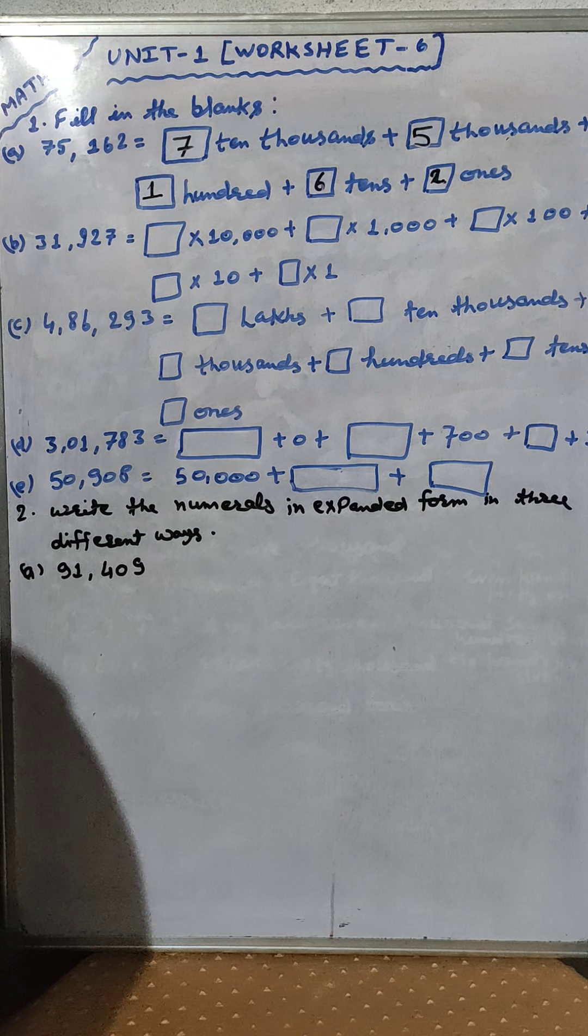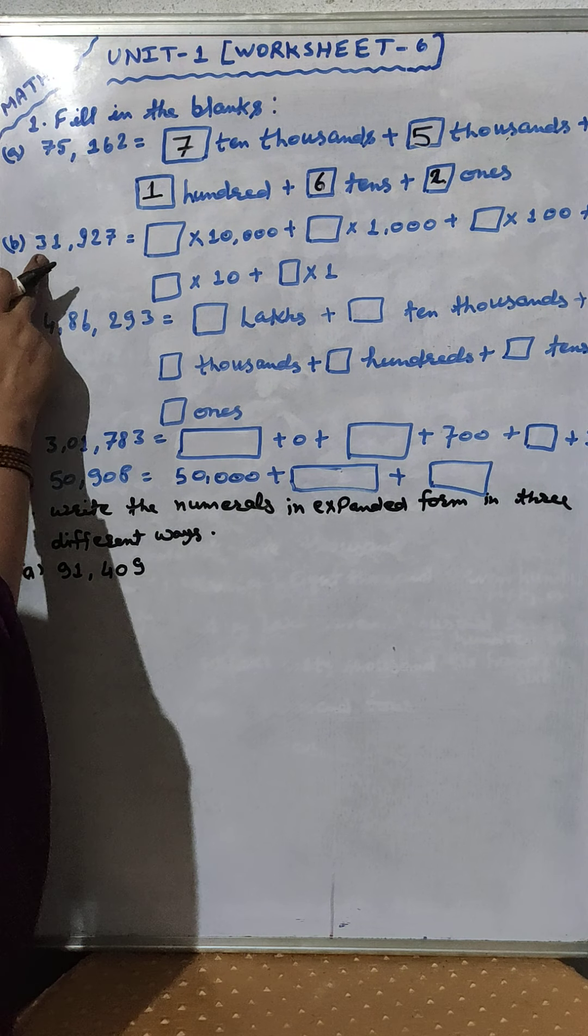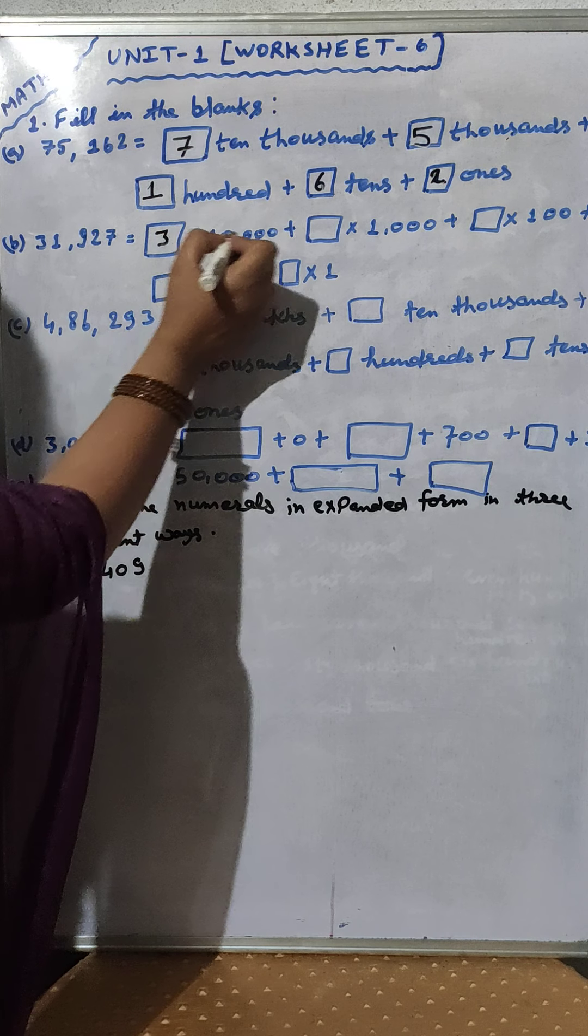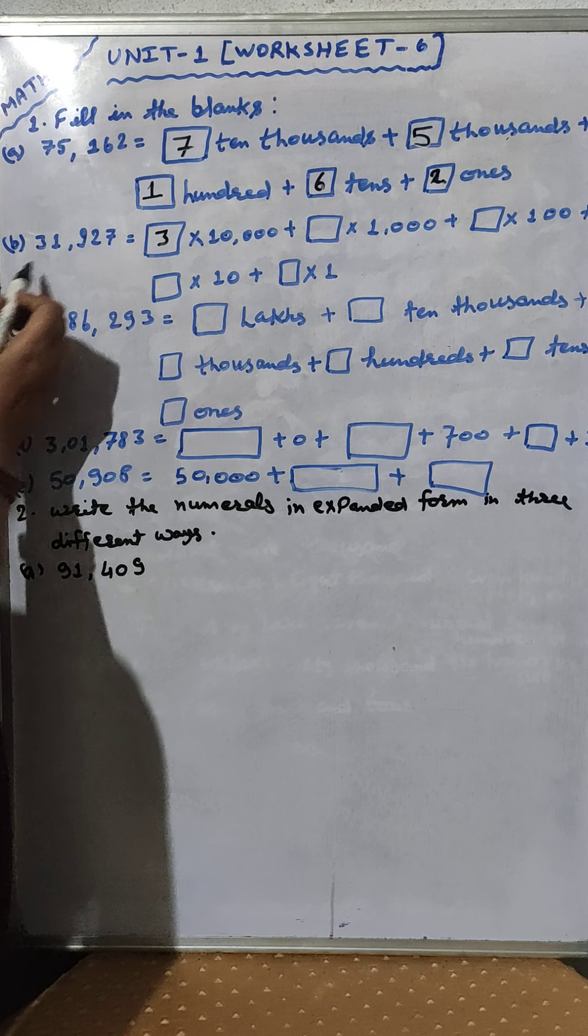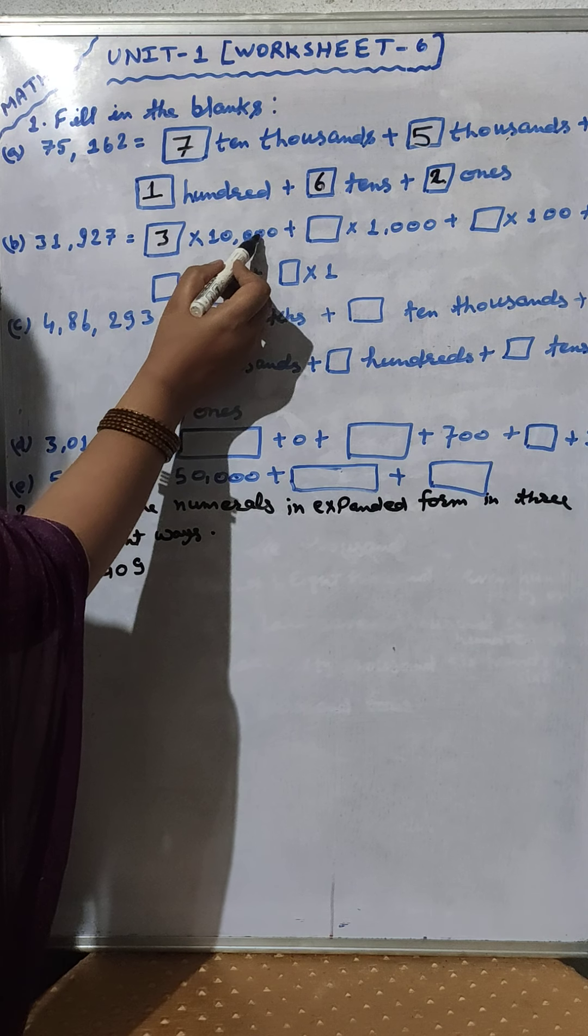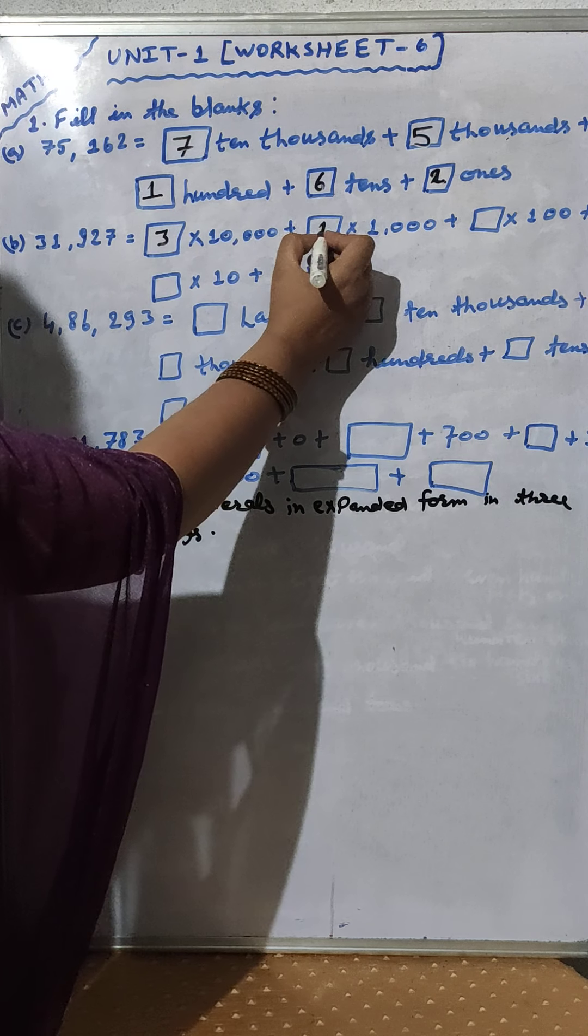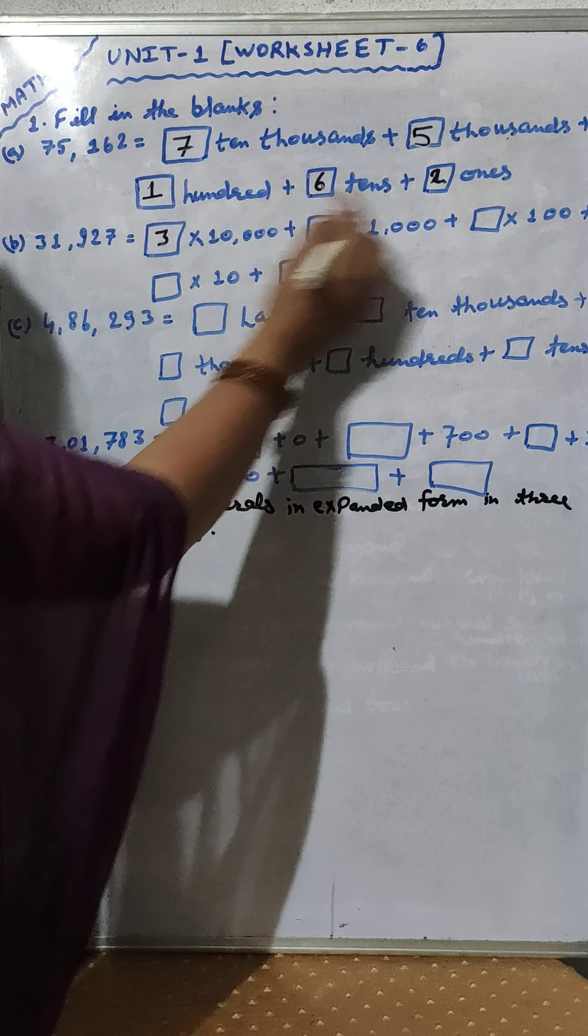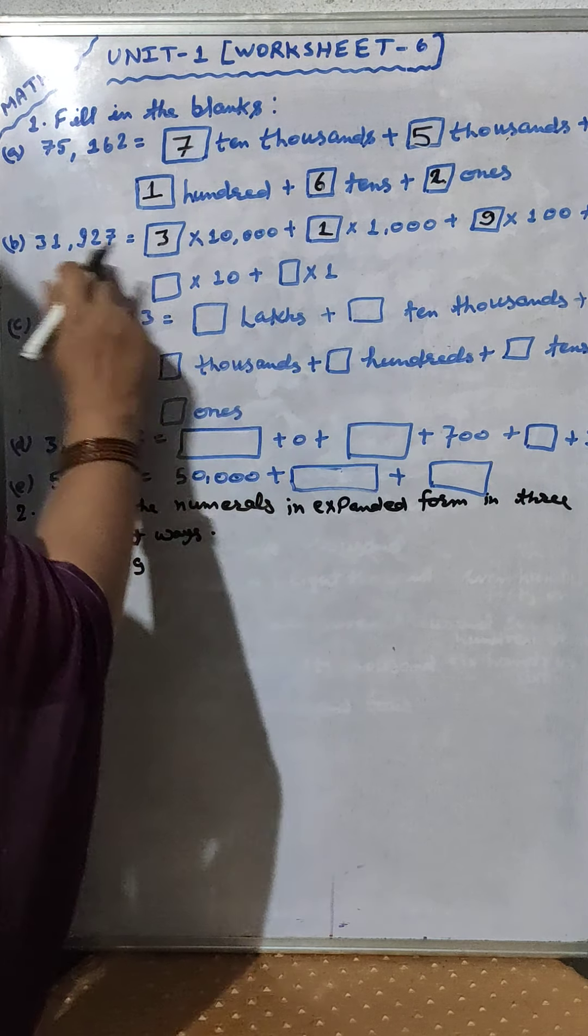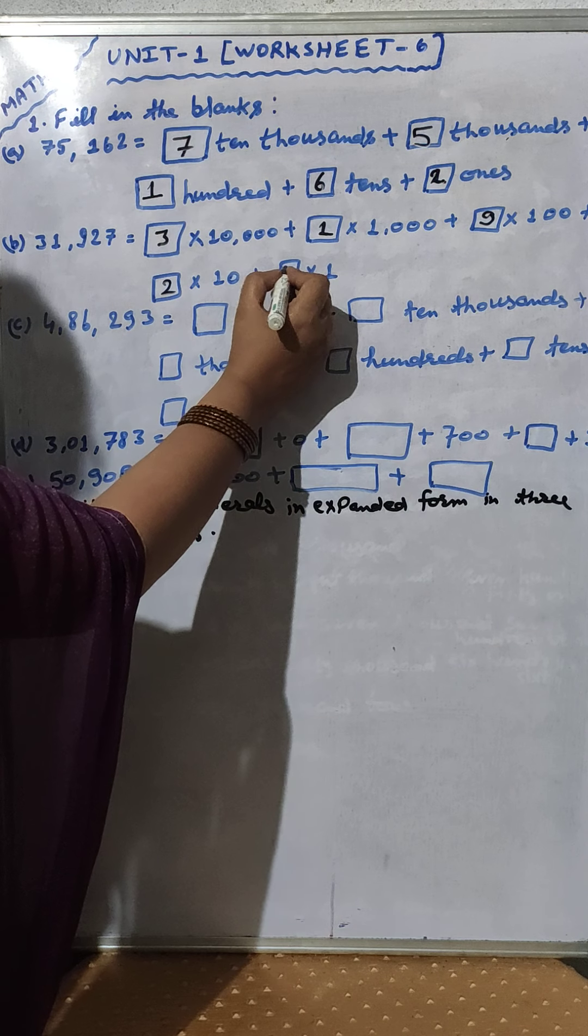Question number B. Dash into 10,000. We will look here 3 into 10,000, because after 3 there are 4 digits. So we will put here 4 zeros. Then after 1 into 1000, then after 9 into 100, 2 into 10, and 7 into 1.